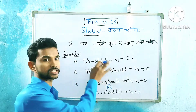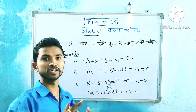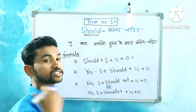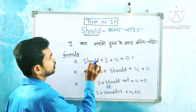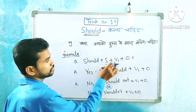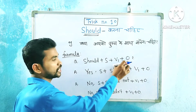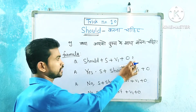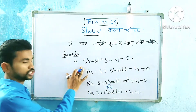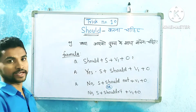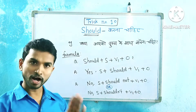Now let's look at the formula. Subject — I, you, we, he, she — then 'should,' then the verb, then the object. For questions, add a question mark after the object. Otherwise, for statements, keep the same structure.